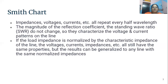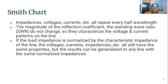The standing wave is a resultant of the incident waves and the reflected waves. If the load impedance is normalized by the characteristic impedance of the line, then the voltages, currents, impedances, etc., all still have the same properties. But the results can be generalized to any line with the same normalized impedances — like as we use in filters, we normalize the characteristic impedances. So we take the value of the characteristic impedance in the normalized range and we can use that range to apply on various impedances.